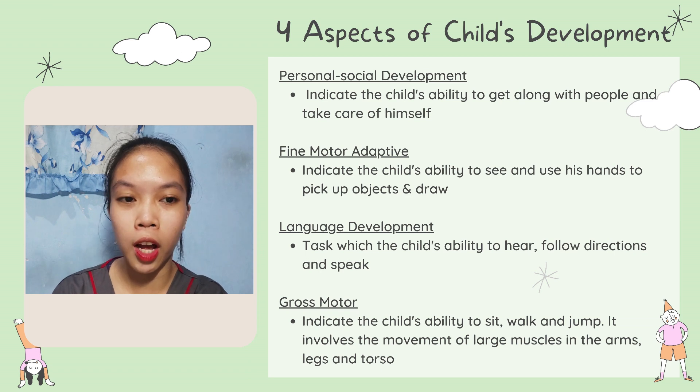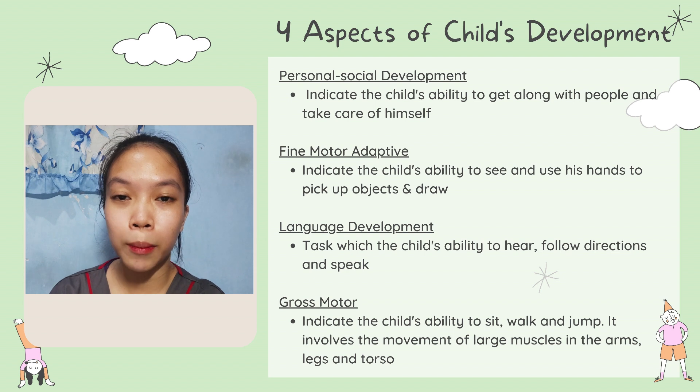We have four aspects of child development evaluated by the MMDST and DDST: personal social, language, fine motor adaptive, and gross motor skills. Our first client is a child aged 4 years, 3 months, and 13 days. The first aspect we are going to check is personal social development, which indicates the child's ability to get along with people and take care of himself.